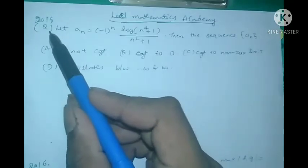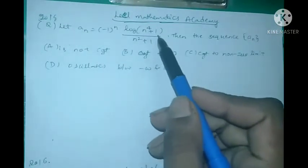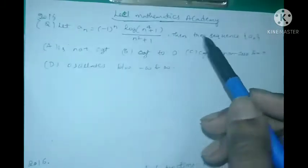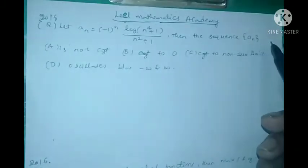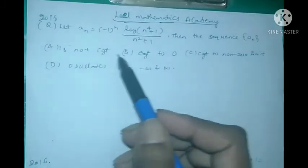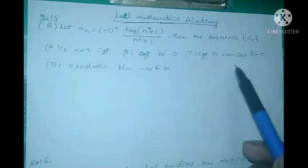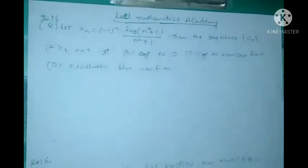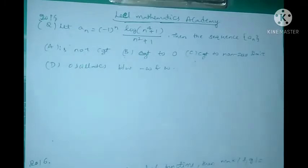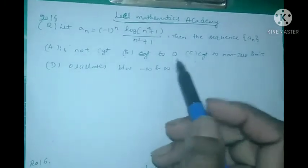This question was asked in the K-set examination 2018. Let a_n = (-1)^n * log(n^4 + 1) / (n^2 + 1). Then the sequence a_n: option A is not convergent, option B is convergent to zero, option C is convergent to a non-zero limit, and option D is oscillates between minus infinity and infinity.